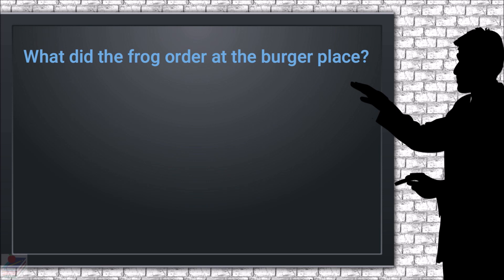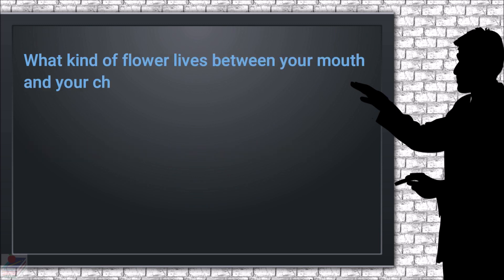What did the frog order at the burger place? French flies and a diet croak. What kind of flower lives between your mouth and your chin? Two lips.